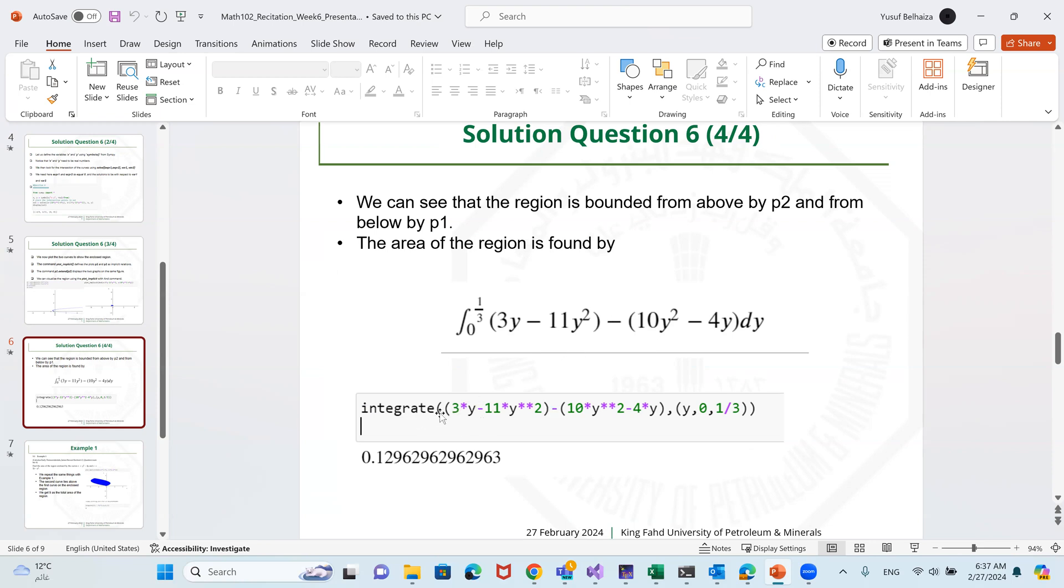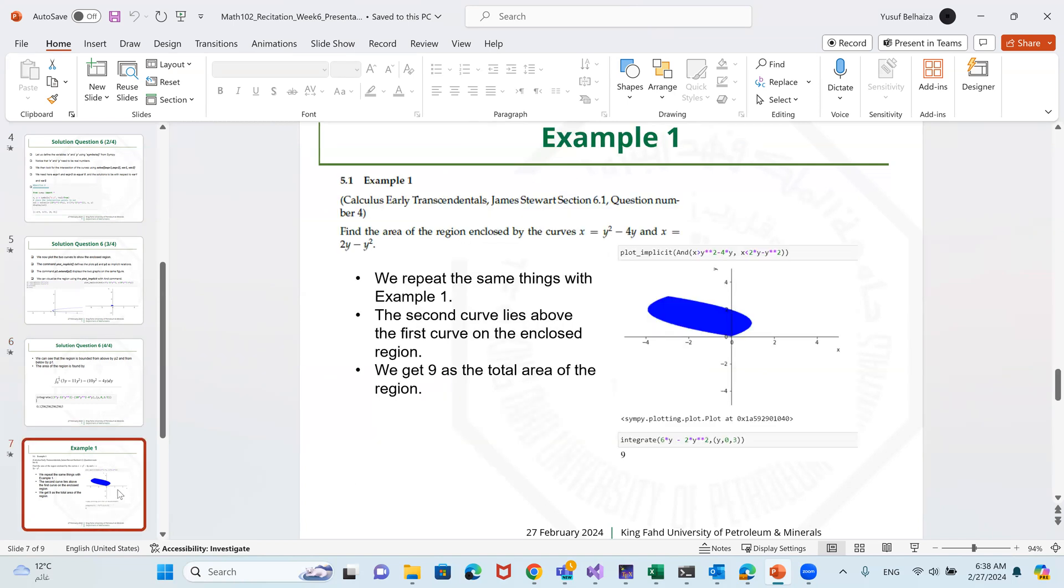Once you integrate this with the integrate command, of course, the first function on the second function and the integration variable is y, the lower limit is 0, the upper limit is 1 over 3, and we get 0.129629. And that's the result of the integration. That's it.